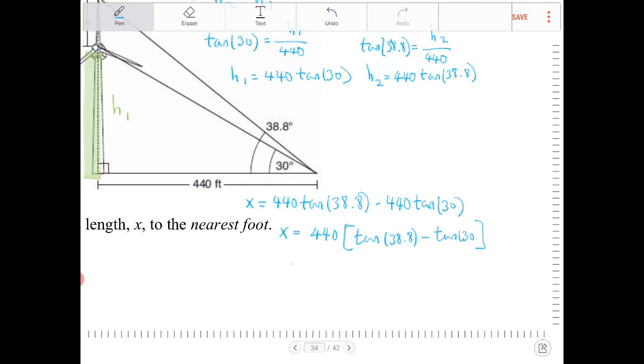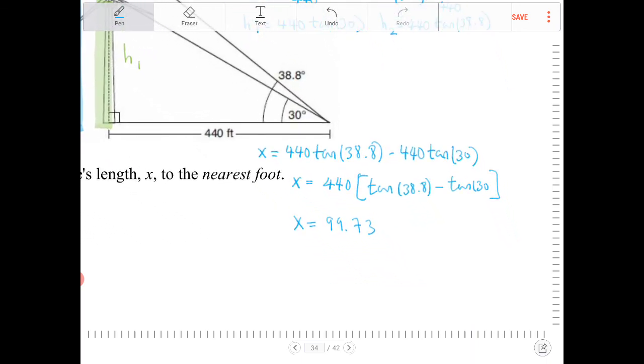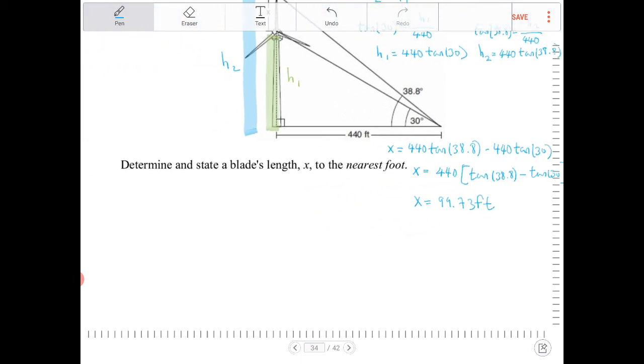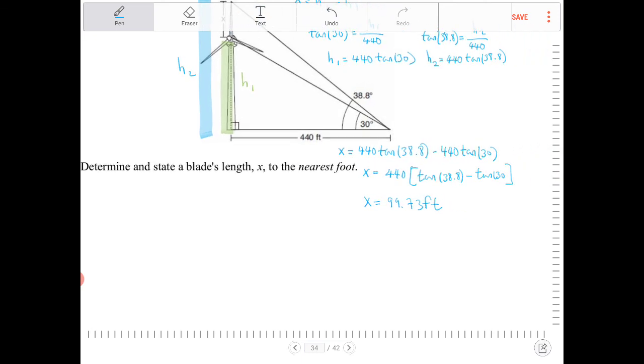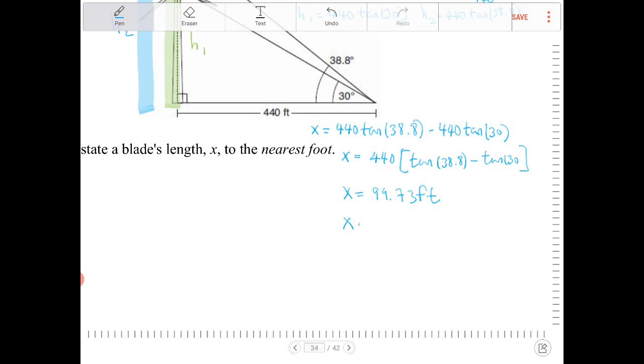So x equals 99.73 feet. The question asks to state the blade's length to the nearest foot. Rounding to the nearest foot, x is approximately 100 feet.